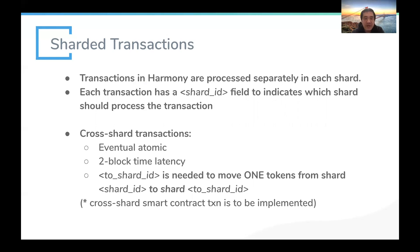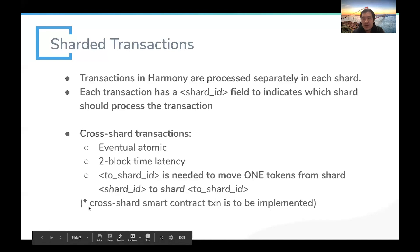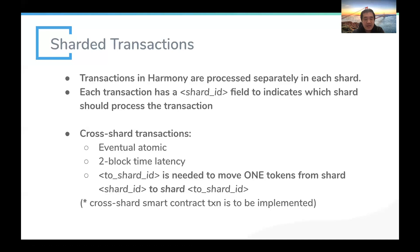Since we use BFT-based consensus with instant block finality, cross-shard latency is very fast — it only takes two block times to confirm. The first shard processes the transaction and produces a receipt, which is sent to the destination shard; the destination shard packs it into another block and the cross-shard transaction is fully confirmed in just two block times. Currently we only support cross-shard transfer of ONE tokens; we're still working on cross-shard smart contract communication.